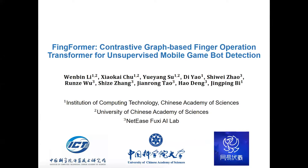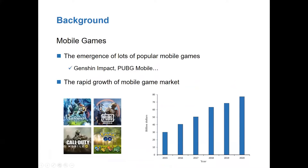This presentation introduces our recent work on a formal contrastive graph-based finger operation transformer for unsupervised mobile game bot detection. Recent years have witnessed the rapid development of mobile terminal devices and the consequent emergence of lots of popular mobile games, such as Genshin Impact. The global mobile game market has grown rapidly over the past few years and is now worth more than $19 billion, accounting for half of the global game market.